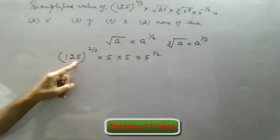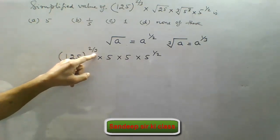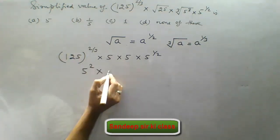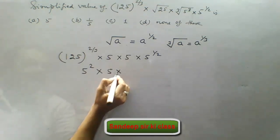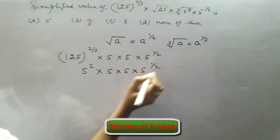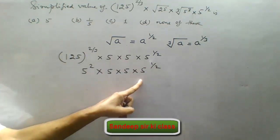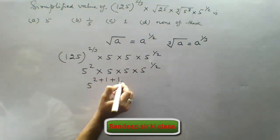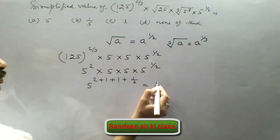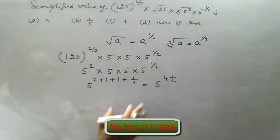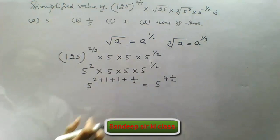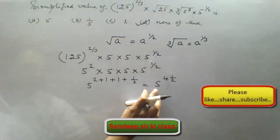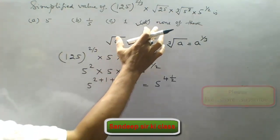Now 125 is 5 to the power 3, and that power 3 cancels the cube root's 3. So we get 5 to the power 2 as the first term. Second term is 5 to the power 1 which is 5. Third is 5, and the 4th is 5 to the power 1 upon 2. Now base is 5, so powers are added: 2 plus 1 plus 1 plus 1 upon 2, which equals 5 to the power 4 and a half. So the option here is none of these.